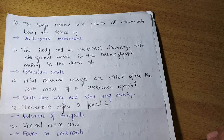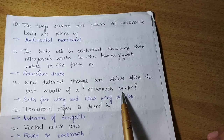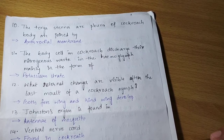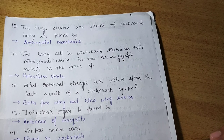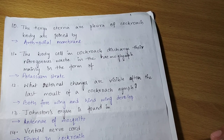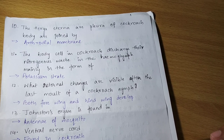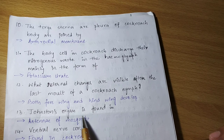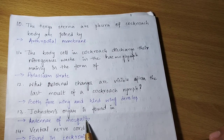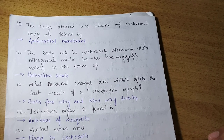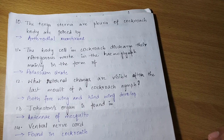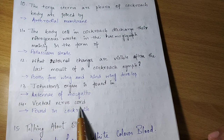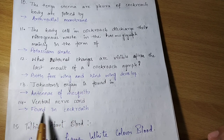Question number twelve: what integral changes are visible after the last moult of a cockroach nymph? Both forewings and hindwings develop — मतलब जैसे आदमियों में हाथ-पाँव आना start होता है, वैसे इनमें four wings develop होते हैं। Also, the Johnston's organ is found in the antenna of mosquitoes. Ventral nerve cord (VNC) is found in cockroach.